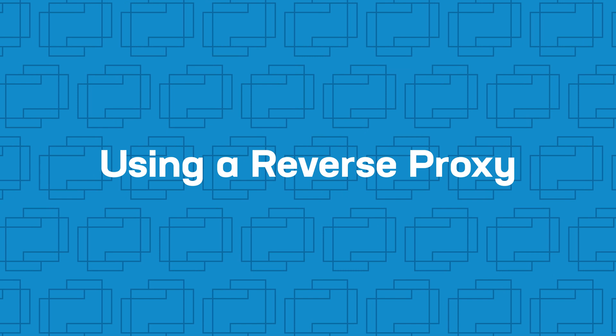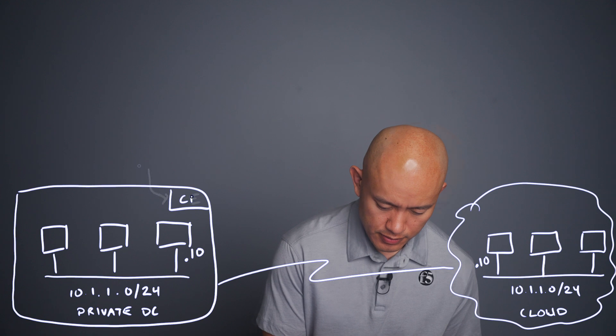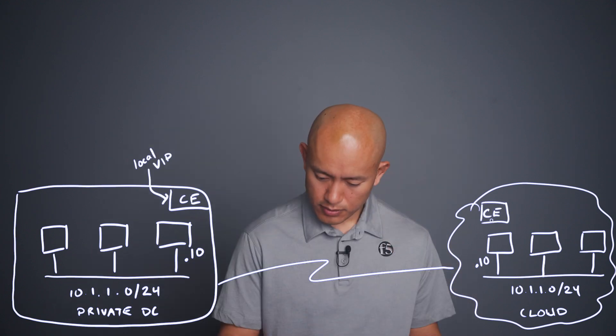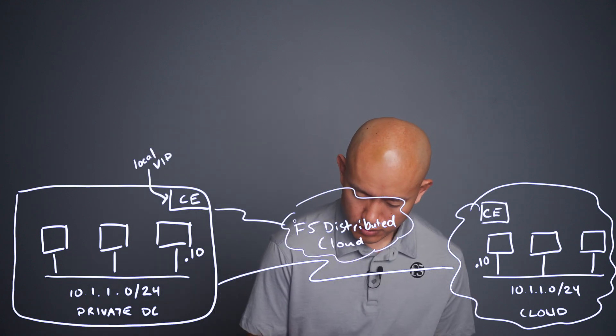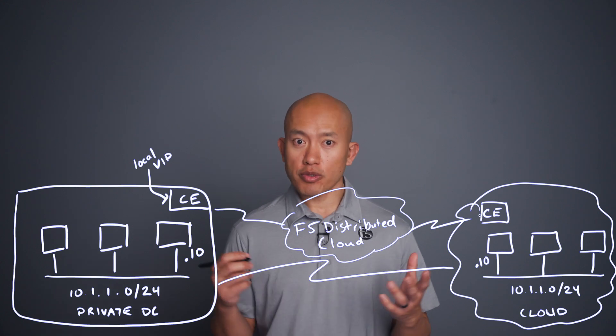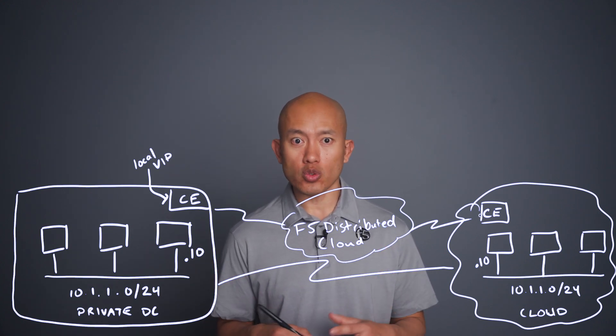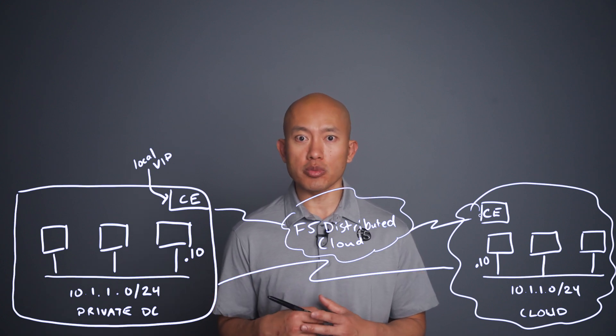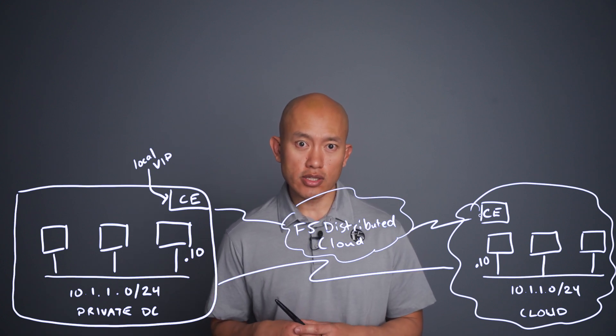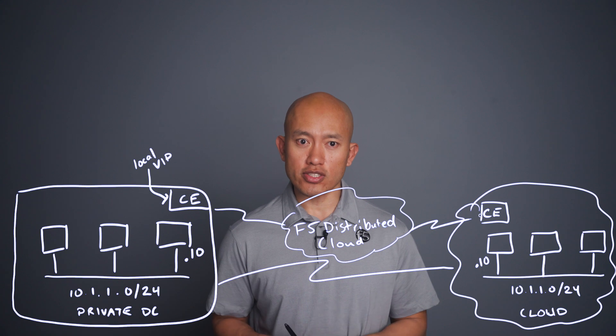The most flexible option is going to be using a reverse proxy to present services. This method configures a localized IP address or name representing the far-side application in the local private data center. Something like F5 Distributed Cloud Customer Edges can be deployed as needed and host these localized IP addresses. This provides ease of management and transit setup because the customer edges will automatically join into the global fabric of the F5 Distributed Cloud and alleviate any of those burdens.